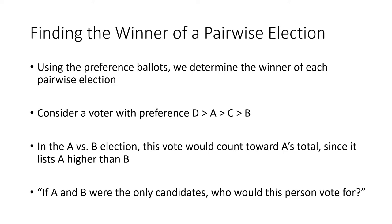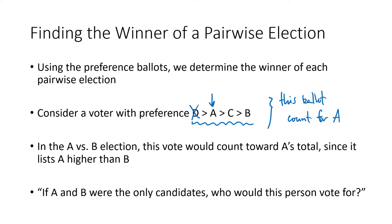Here's what we would do to find the winner of a pairwise election. We use the preference ballots. Let's go back to our voter who had the preference D > A > C > B. Who does this ballot go for in the A versus B election? It's A versus B — this voter would love to vote for D, but they can't because D isn't in this matchup. So we mentally cross out D, and A is the second choice. If the choices are A versus B, then A is preferred over B. So this ballot would count for A. We do that for every ballot and figure out which candidate each ballot goes for in that pairwise election.